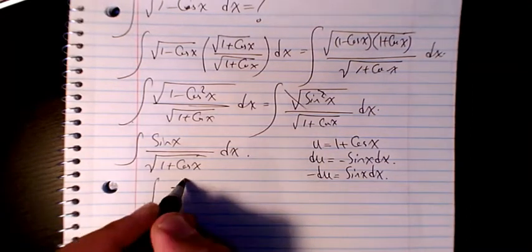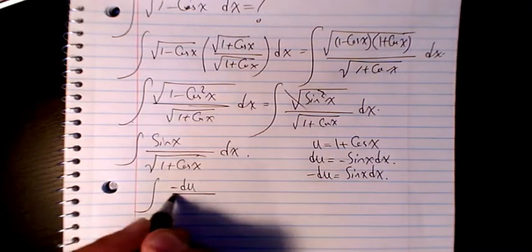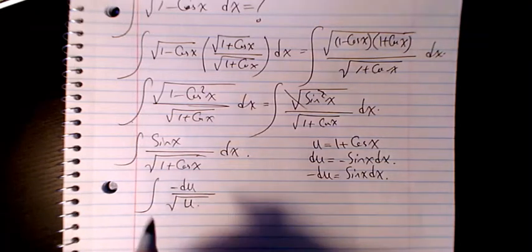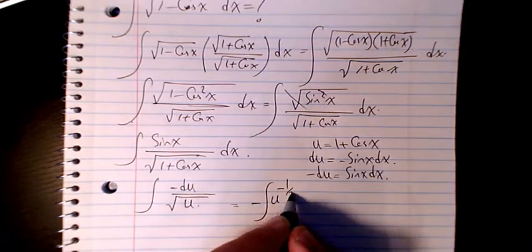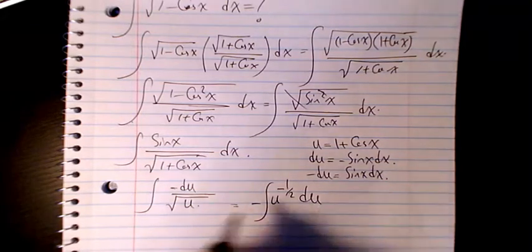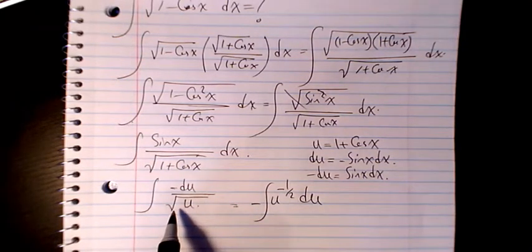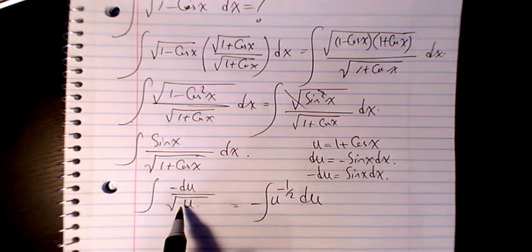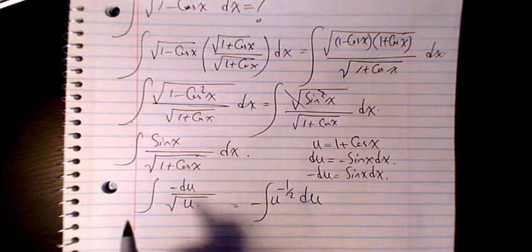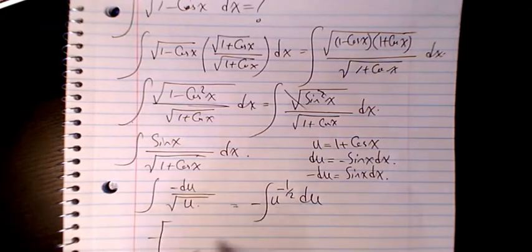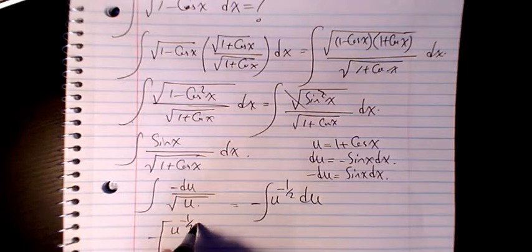The integral becomes negative du over square root of u, which is negative u to the power of negative one over two du. Since the square root in the denominator brings the exponent to negative one over two, when we integrate it becomes u to the power of negative one over two plus one.